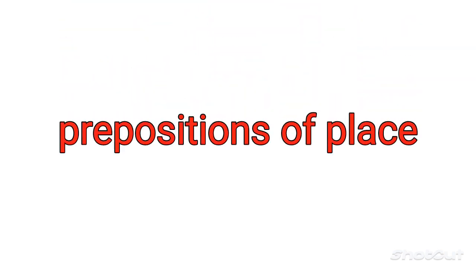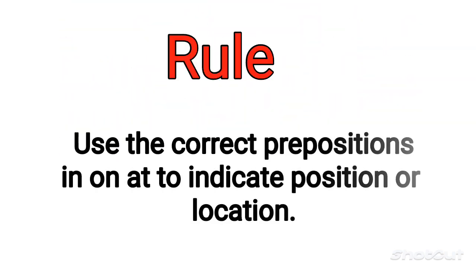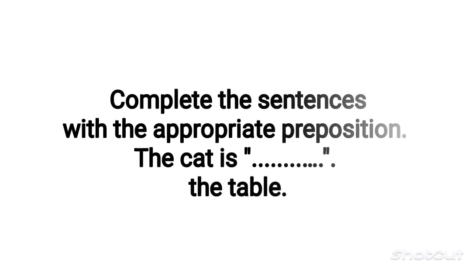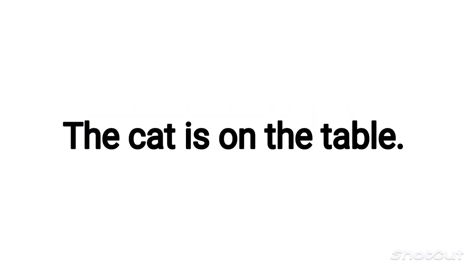Prepositions of Place Rule: use the correct prepositions — in, on, at — to indicate position or location. Exercise: complete the sentences with the appropriate preposition. 'The cat is ___ the table.' Correction: The cat is ON the table.